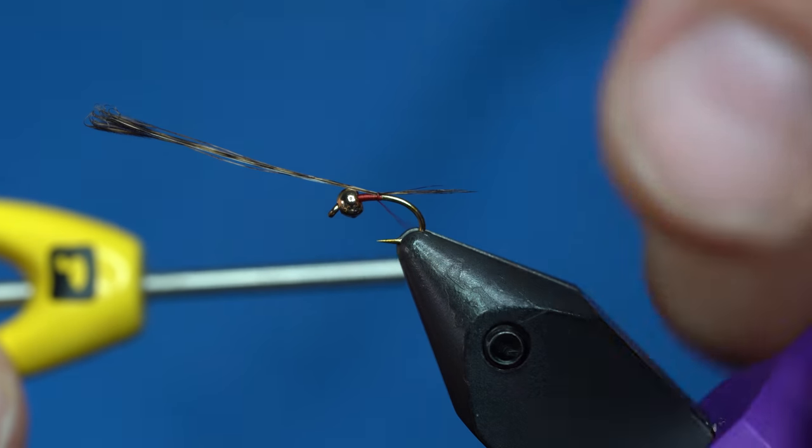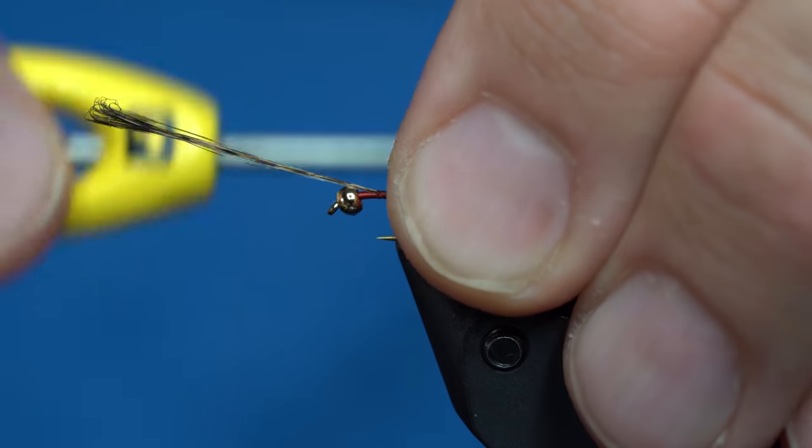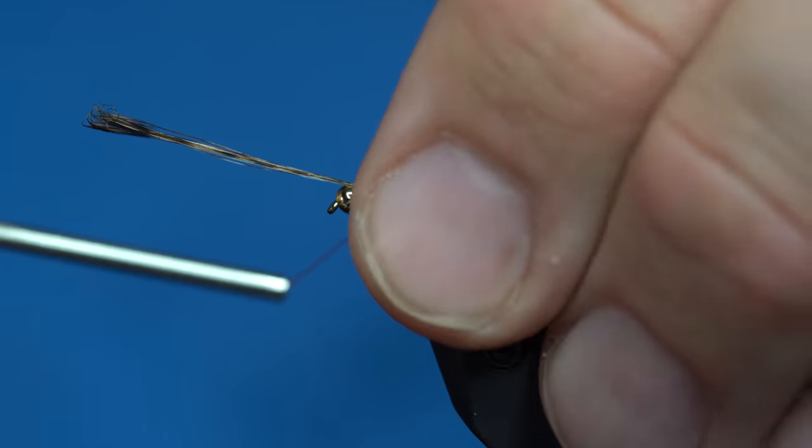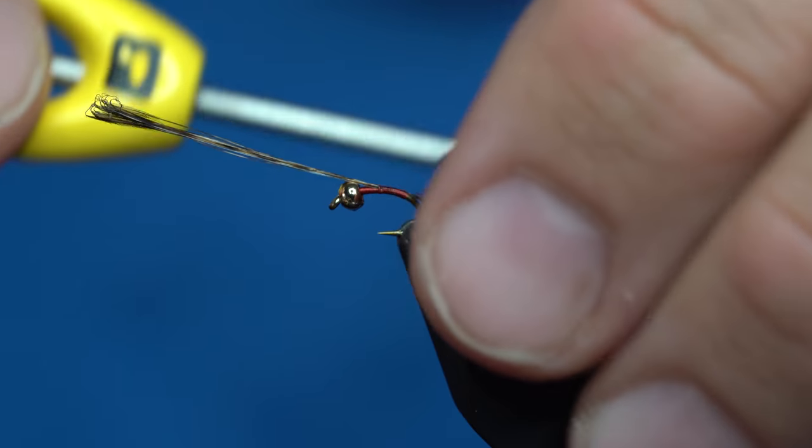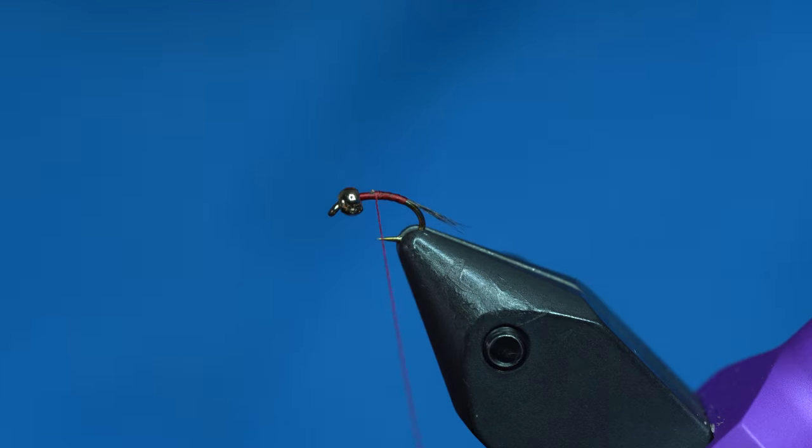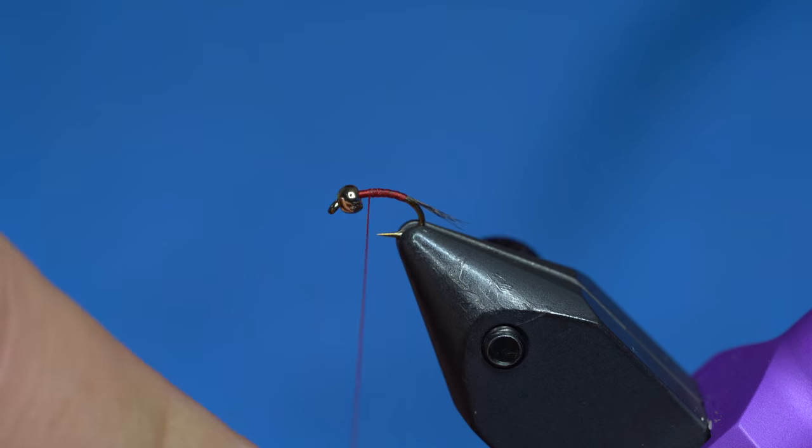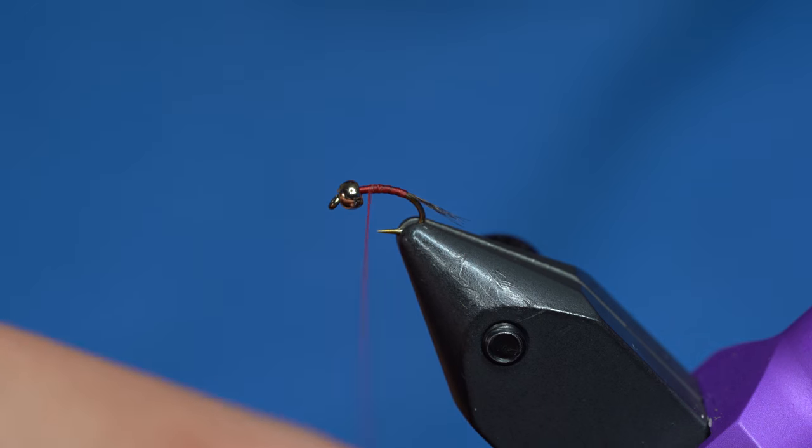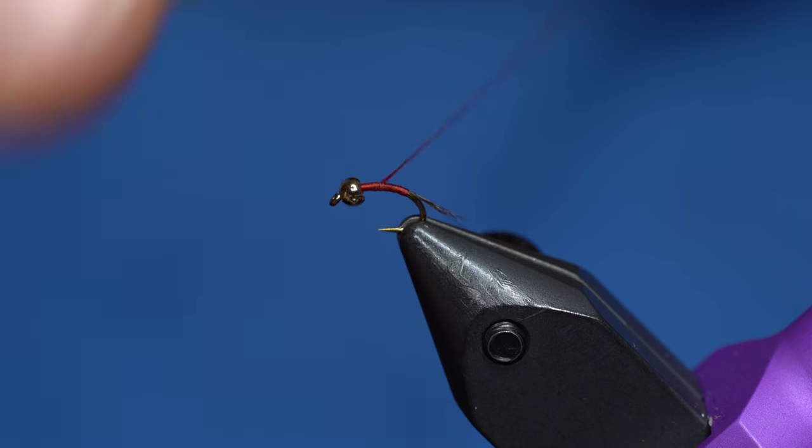I'll just measure it in about right there and then wrap it down the hook, about to right there. Then I'll trim that off. I'm going to unwind my thread a little bit to keep it flat.